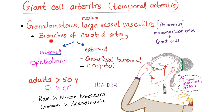It involves branches of the carotid artery. The common carotid artery gives two branches: the internal and external. Of the internal carotid artery, this condition involves the ophthalmic artery. From the external carotid, it involves the superficial temporal artery and the occipital artery.